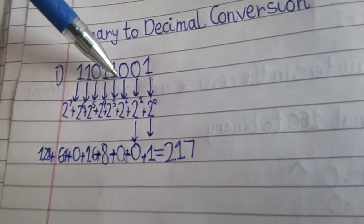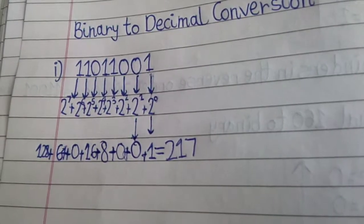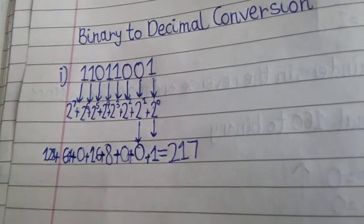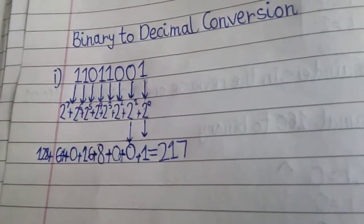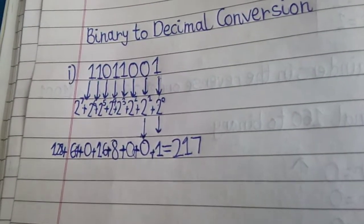Like that we have to calculate. So, I hope everyone understood this example. And there is no need to get confused. Both methods are simple. Binary to decimal and decimal to binary.